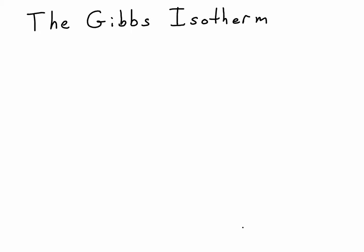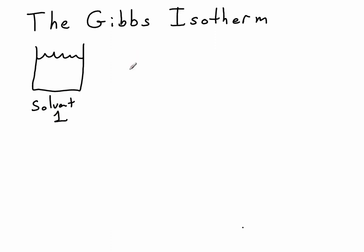The Gibbs isotherm is going to answer the question: what happens if we take a beaker with some solvent at some particular temperature — we'll call the solvent molecule 1 — and we take some solute and put it into the beaker, dissolve it in the solvent, and call that chemical number 2. The question is, what happens to the surface tension when we add in that solute? Is it going to go up? Is it going to go down? And by how much?